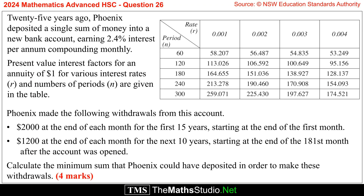Question 26. 25 years ago, Phoenix deposited a single sum of money into a new bank account, earning 2.4% interest per annum, compounding monthly. Present value interest factors for an annuity of $1 for various interest rates and numbers of periods are given in the table.